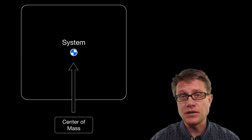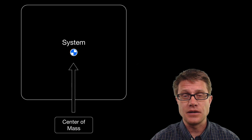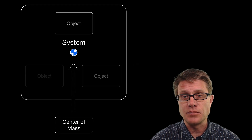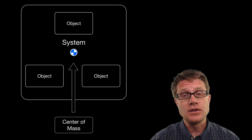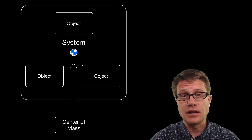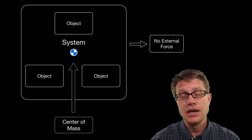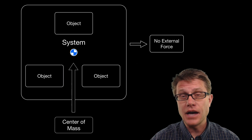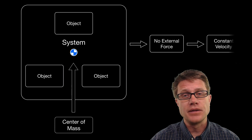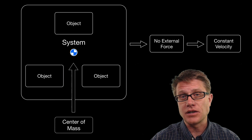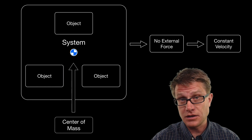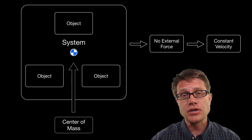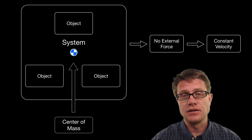Any system is going to have a center of mass, made up of all the objects within the system. According to Newton's second law, if we do not apply a net external force then there is going to be constant velocity — no acceleration. The center of mass will either remain still or move with a constant velocity.